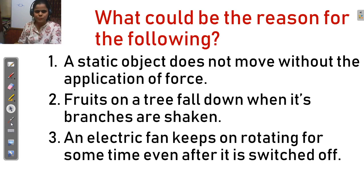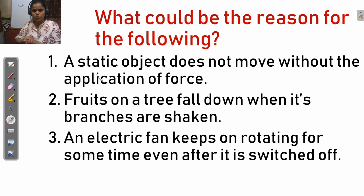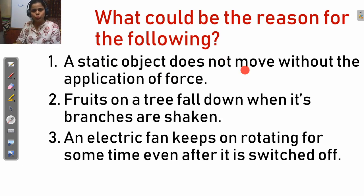So students, just read these examples. What could be the reason for the following examples? The first is: a static object does not move without the application of force. A static object means an object that is at rest position. An object at rest does not move until a force is applied.